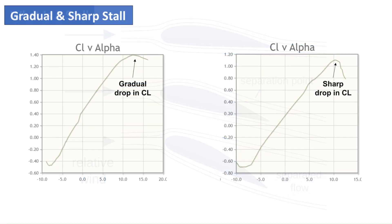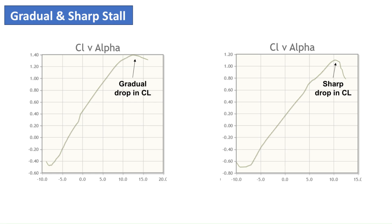The stall can either be gradual or sharp, depending on the airfoil shape. This can have a huge effect on safety and flying qualities of the aircraft during slow speeds or high angles of attack. Especially during takeoff and landing, an aircraft is flying slow and at a high angle of attack, so stall behavior is crucial for safety.